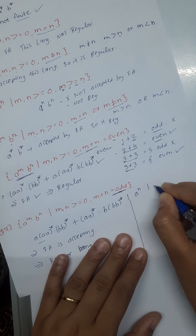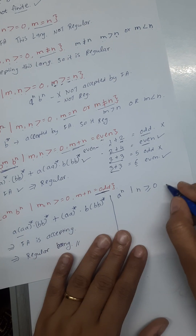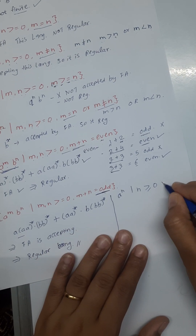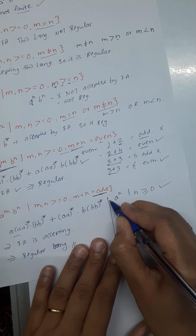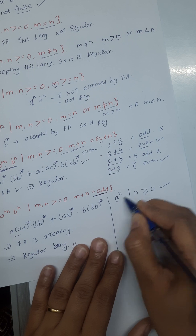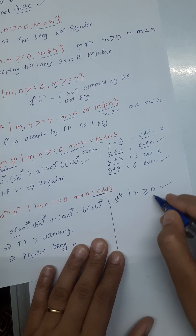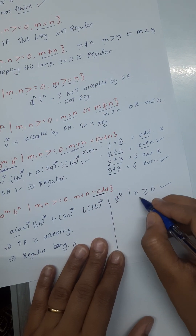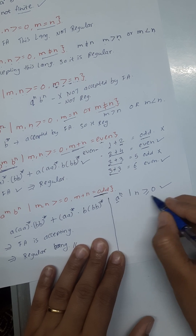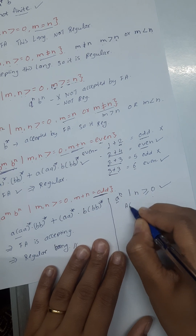Suppose the grammar is a raised to n where n is greater than or equal to 0. This is going to be accepted by FA because there is only a single power — a raised to n — with no comparison, condition, or dependency. So this is accepted by FA.